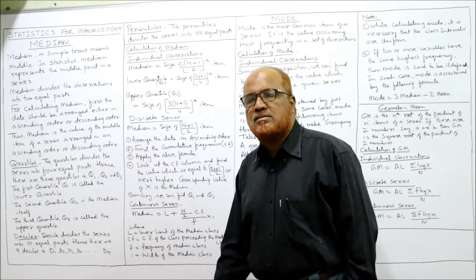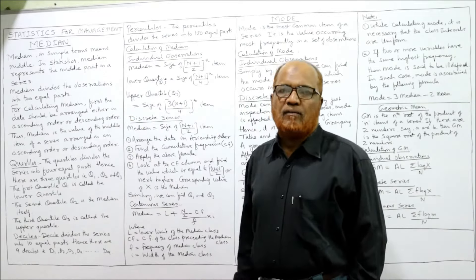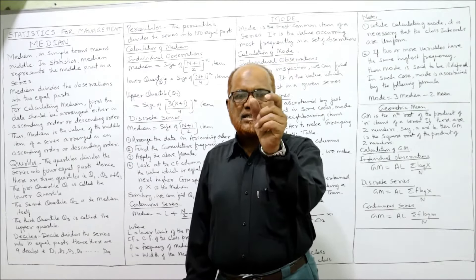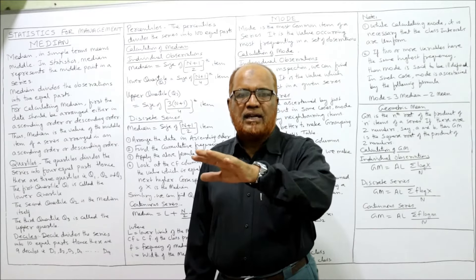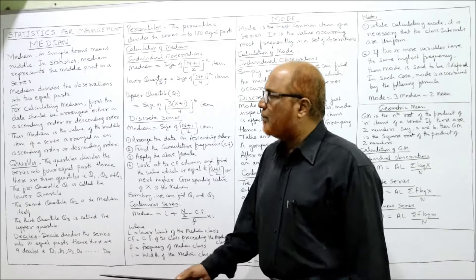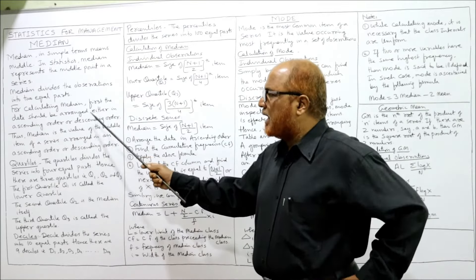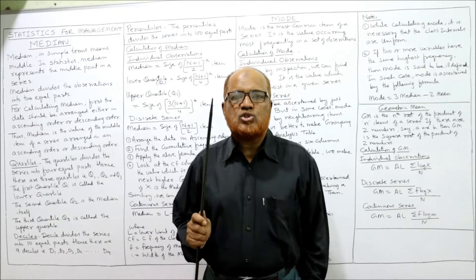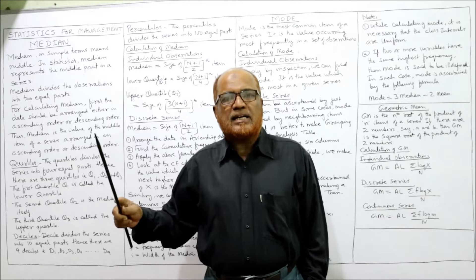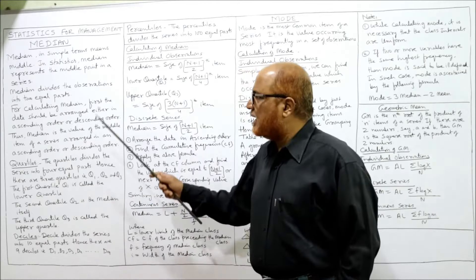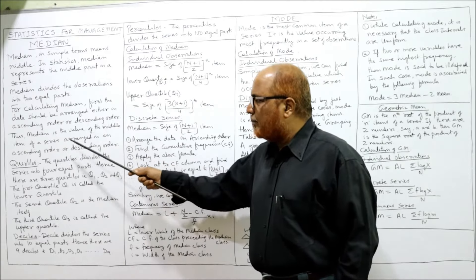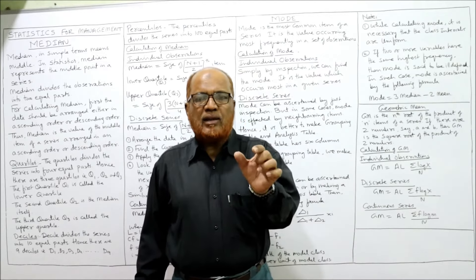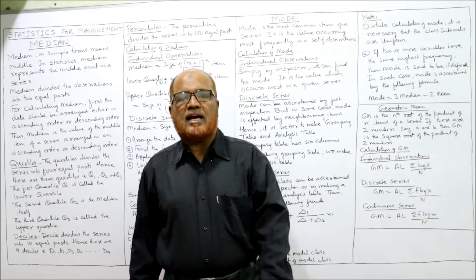Median represents the middle point of a series. Median divides the observations into two equal parts because we are selecting the middle point. For calculating median, the data must first be arranged in either ascending or descending order. The median is the value in the middle of the series after arranging the data — that's all.